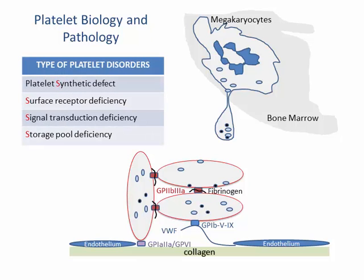Hereditary platelet disorders are caused by defects in this sequential platelet activation process. We can thus categorize platelet defects into: platelet synthetic defect, surface receptor deficiency, signal transduction deficiency, and lastly, storage pool deficiency.